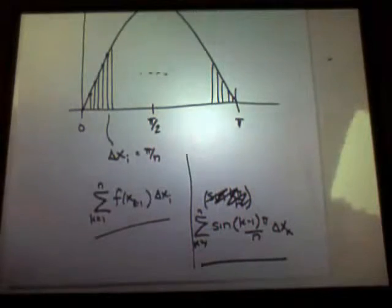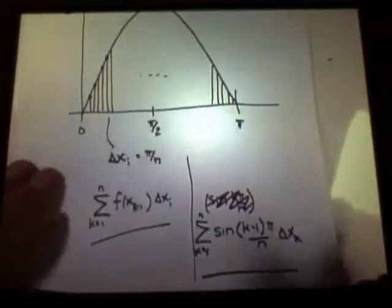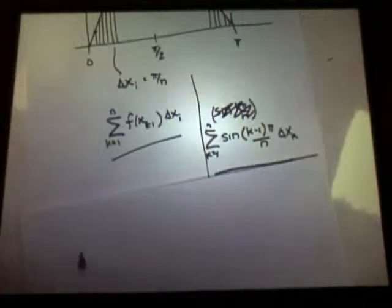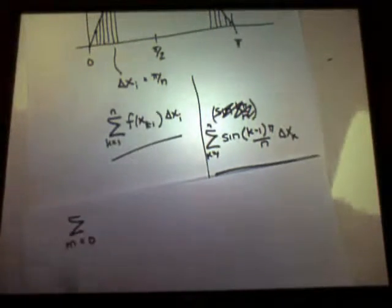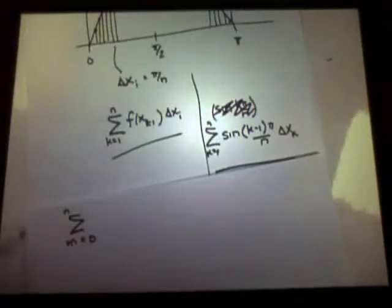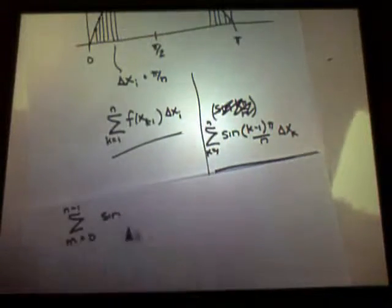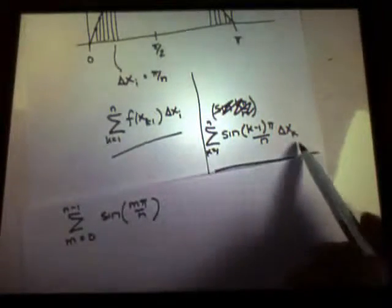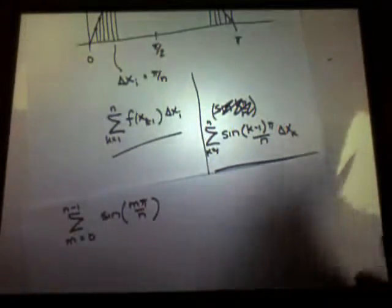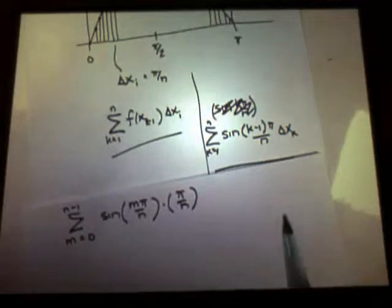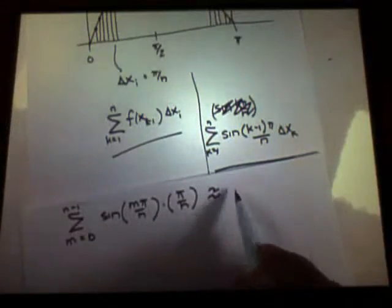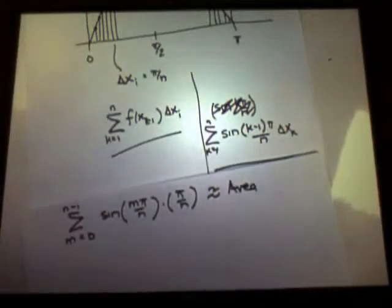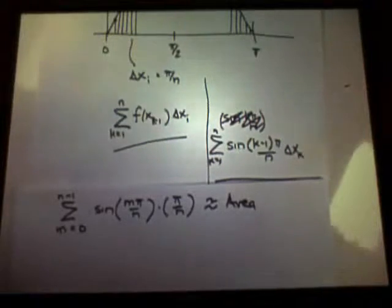Now I'm trying to get rid of that k minus 1. I'd like that to be k. Let me re-index this. If I'm going from k equals 1 to n and taking 1 away from k, why don't I go from m equals 0 to n minus 1? And I would have sine m π over n. And then every one of the delta x_k's is the same length as π over n.